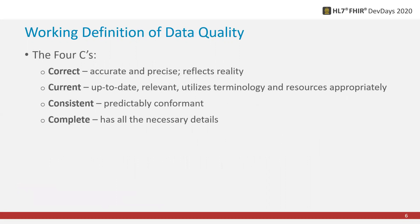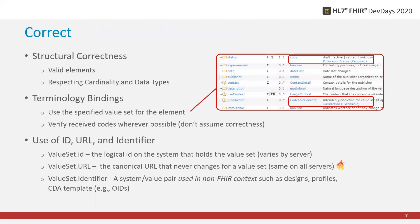As a guiding principle, we can break up our abstract idea of data quality into things that we can try to measure or achieve. I'll use these four C's as a way to organize the best practices and help you ensure that your data is correct, that it's current, that it is consistent, and that it's complete.